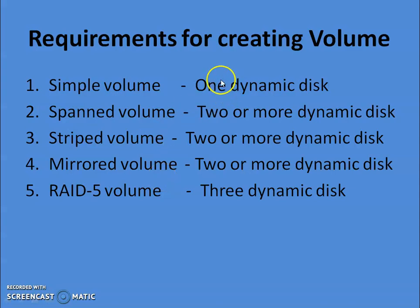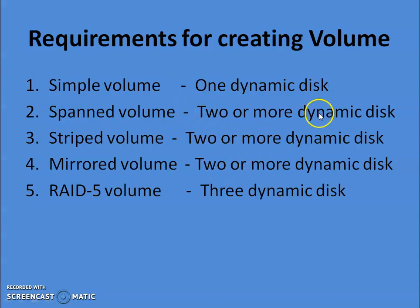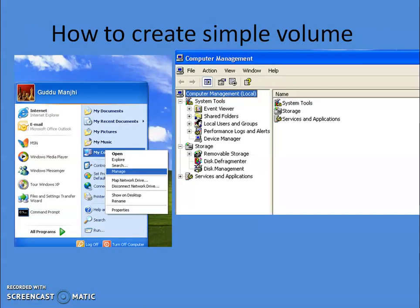For a simple volume, you need only one dynamic disk — one hard disk drive that must be dynamic. Span, stripe, and mirror volumes all require a minimum of two hard drives, and all must be dynamic. RAID-5 requires a minimum of three hard disk drives, and all must be dynamic.